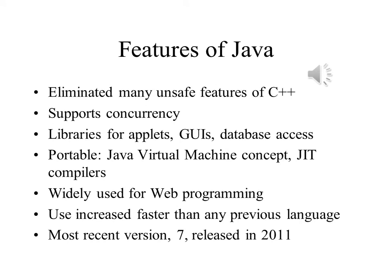C++ inherited many things from C, including its loose typing, which makes it more difficult to create secure applications than it is in a language that has strong typing, where data items are not allowed to be used in ways that are contrary to their type. Java is considered a type-safe language, meaning that such uses are forbidden. Java supports concurrency, allowing the programmer to coordinate the execution of more than one thread at a time.